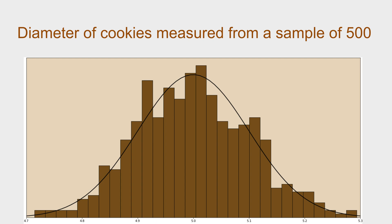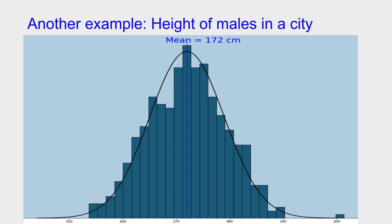I notice that these readings are centered about 5 cm, which is the first parameter we're discussing: the mean of this distribution. Taking another example, I look at the height of males in a city, take readings for a sample, plot a histogram, and again overlay a normal curve. I notice the same parameter appearing: the mean, which is 172 cm.